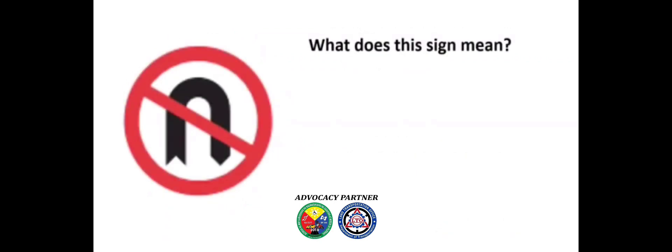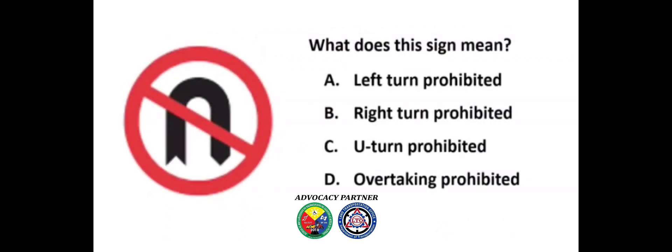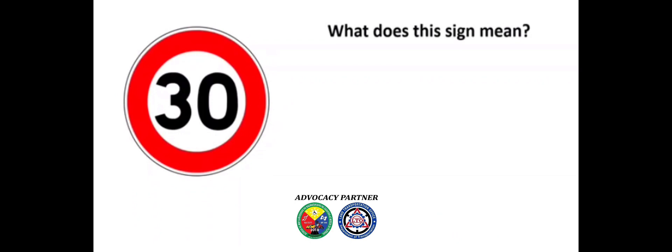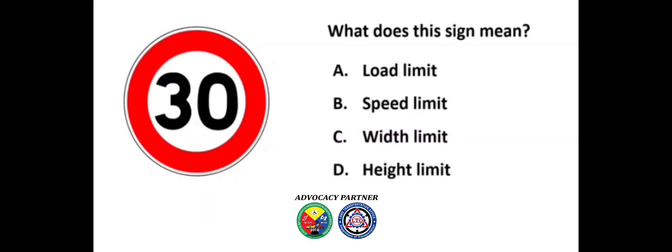What does this sign mean? A) Left turn prohibited, B) Right turn prohibited, C) U-turn prohibited, D) Overtaking prohibited. Answer: C) U-turn prohibited. What does this sign mean? A) Load limit, B) Speed limit, C) Width limit, D) Height limit. Answer: B) Speed limit.